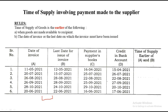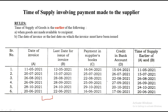So the time of supply: 11th May and 12th May — 11th is the earlier date, so time of supply is 11th May. 20th July and 15th July — 15th July is earlier, so 15th July is the answer. 26th August and 28th August — 26th is earlier. 26th September and 28th September — 26th is earlier. 24th October will be your time of supply. And last, 20th June and 22nd June — 20th is earlier, so the answer is 20th June. You just have to remember the type of sum — whenever there is payment in the supplier's book, the rule is date of invoice or last date of invoice, whichever is earlier.